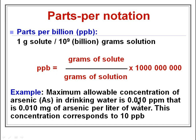For example, the maximum allowable concentration of arsenic in drinking water, which is harmful to health, is 0.01 ppm. This means 0.01 mg of arsenic per litre of water, and this concentration is equal to 10 ppb. To calculate any solution concentration in ppb, use the formula: grams of solute divided by grams of solution, multiplied by 1 billion. In the next video we will see some more conversions of ppm, mass percentage, and ppb.